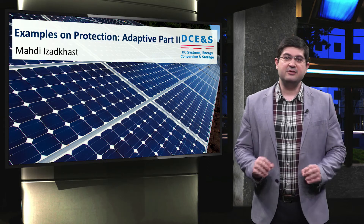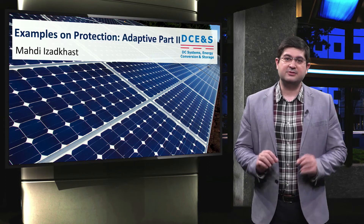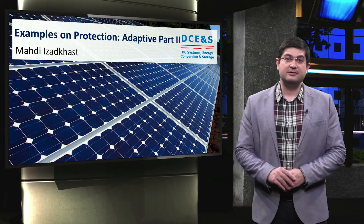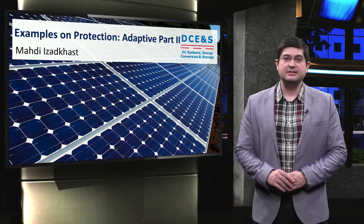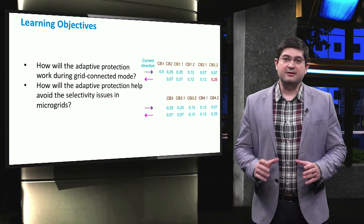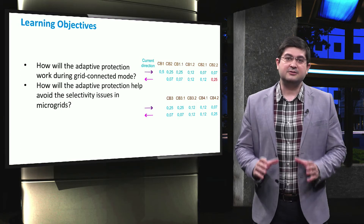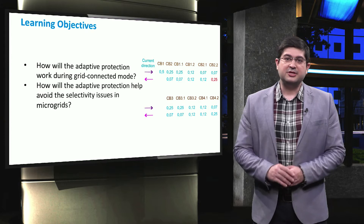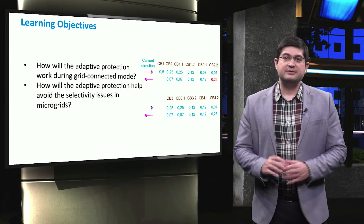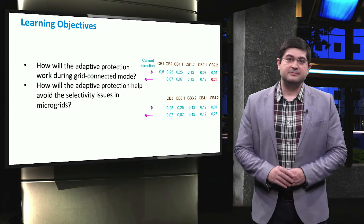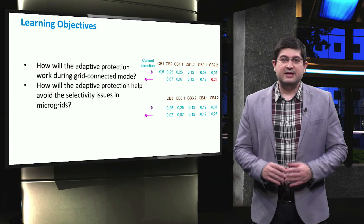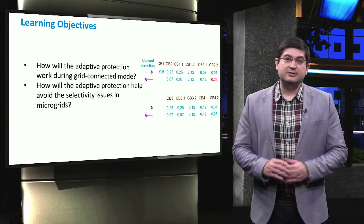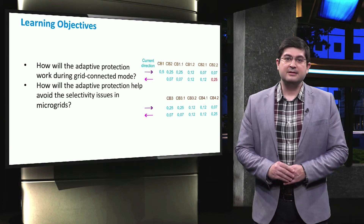During this video, we give a brief illustrative example of the adaptive protection related to the grid-connected mode of a microgrid. The main learning objectives will fall under two questions: firstly, how will the adaptive protection work during the grid-connected mode? Secondly, how will the adaptive protection help avoid the selectivity issues in microgrids?